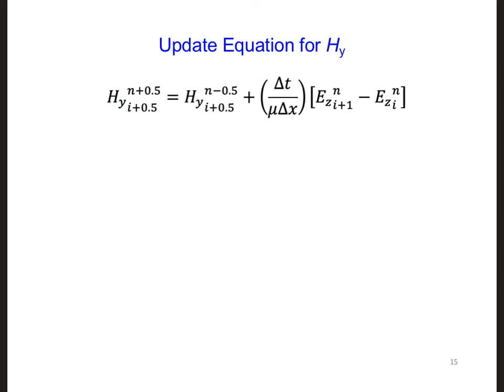If we do that simplification where we solve for the future value of h_y, this is what we get. This is the update equation for all the h_y's in the model. It is the second of the two equations that we want to program into our computer in order to solve for the propagation of electromagnetic plane waves in 1D.